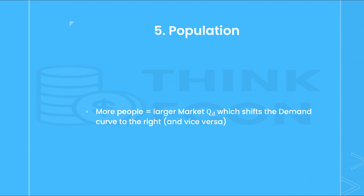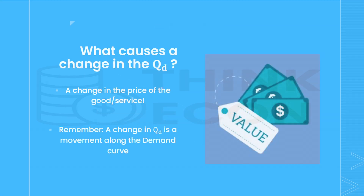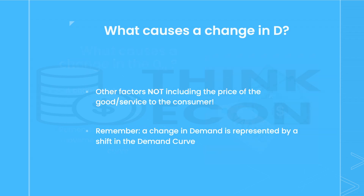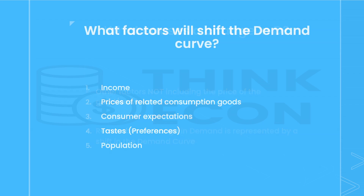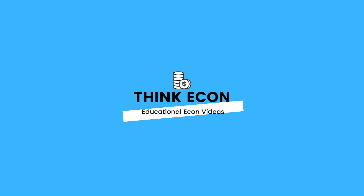To summarize everything we've talked about in this video: a movement along the demand curve is caused by a change in price of that specific good or service. A shift in the demand curve is caused by any of the five shift factors — income, prices of related consumption goods, consumer expectations, tastes or preferences, and population. Now you know the difference between a change in quantity demanded, or a movement along the curve, and a change in demand, or a shift in the entire curve.